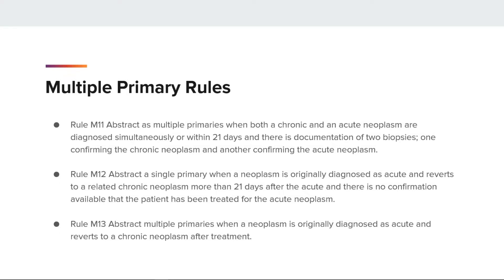Rule M11 is within 21 days but tells us to abstract multiple primaries because there is a positive biopsy confirming the chronic neoplasm and another confirming the acute neoplasm. For rules M12 and M13, treatment is a factor. It is important to determine if the patient received treatment for the acute neoplasm. If the patient was treated, then rule M13 applies and we will abstract the chronic neoplasm as the second primary. But if the patient was not treated for the acute neoplasm, then rule M12 applies first and we only code the acute neoplasm.